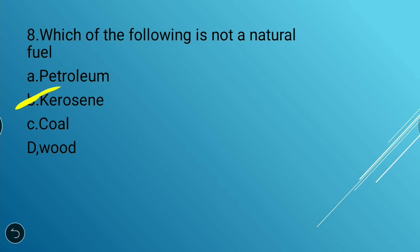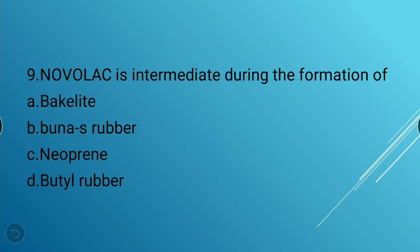Next question: Novolac is an intermediate during the formation of which polymer? Options: bakelite, vulcanized rubber, neoprene, butyl rubber. The answer is bakelite — novolac is an intermediate during the formation of bakelite.